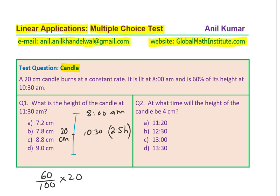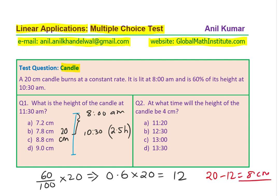60% of 20 means we multiply 0.6 with 20, and that gives us 12 centimeters. So the height has been reduced by 20 minus 12, which is 8 centimeters. This is 8 centimeters less, making the new height 12 from an original 20. So within 2.5 hours, the height has decreased by 8 centimeters. That should help you to solve this question. You can pause the video, answer the question, and then look into my suggestions.